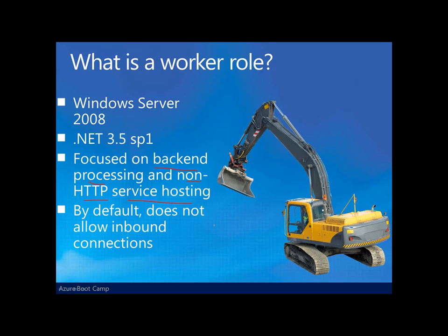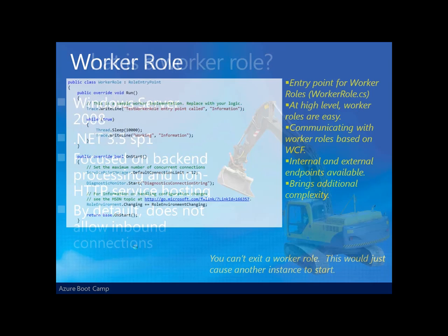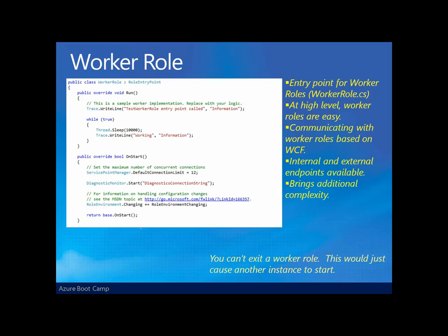By default, a worker role doesn't even allow for inbound connections. A worker role, very much like a web role, has an entry point called WorkerRole.cs. At a high level, a worker role is fairly easy. We have an on-start method, just like with the web role, which is a kickoff point, and then the run method. The run method typically serves in an internal loop that allows us to do some sort of crunching of data or processing.